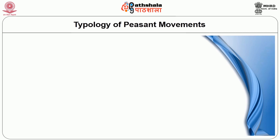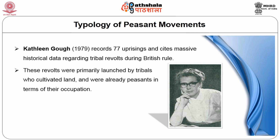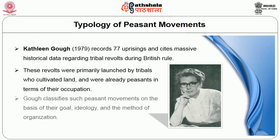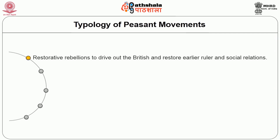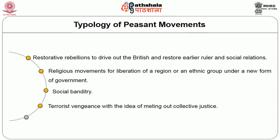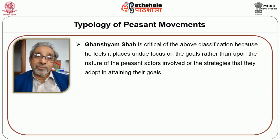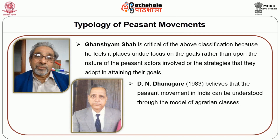Kathleen Gough records 77 uprisings and cites massive historical data detailing tribal revolts during British rule. These revolts were primarily launched by tribals who cultivated land and were already peasants in terms of occupation. Gough classifies such peasant movements on the basis of goal, ideology, and method of organization. According to her, there are five types of revolts: first, restorative rebellions to drive out the British and restore a ruler and social relations; second, religious movements for liberation of a region or ethnic group under a new form of government; third, social banditry; fourth, terrorist vengeance with the idea of meeting out collective justice; and fifth, mass insurrections for the reversal of a particular grievance. Gansham Shah is critical of this classification because he feels it places undue focus on goals rather than on the nature of peasant actors involved or the strategies they adopt.